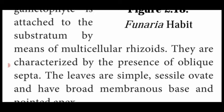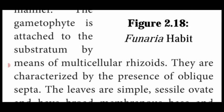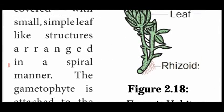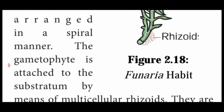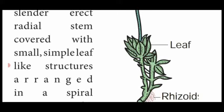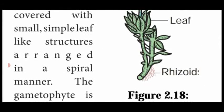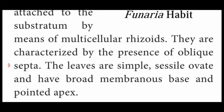The plants are characterized by the presence of oblique septa — partitions that are oblique in shape. The leaves are simple, sessile (meaning no stalk), ovate or spherical in shape, with a broad membranous base and a sharp-pointed apex. The base is simple and membranous while the tip is pointed. This completes the external habit structure of Funaria.